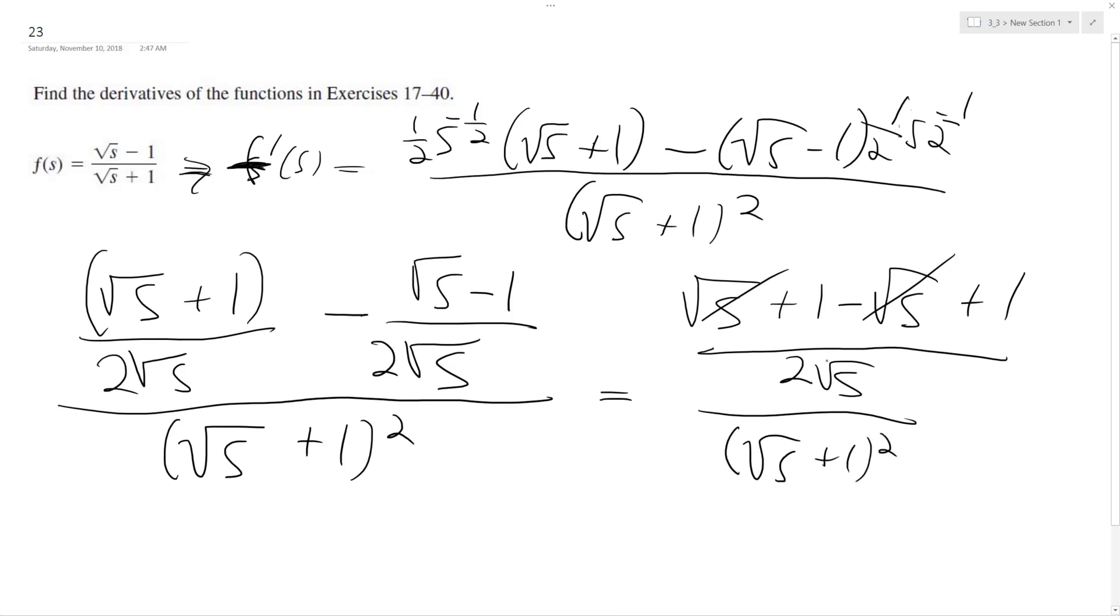And then we get 2. So 1 and 1 here make 2, so that cancels this 2 out. And basically we're left just with square root of S.